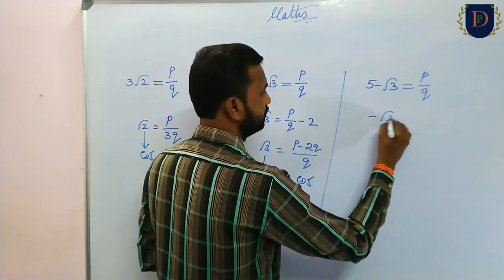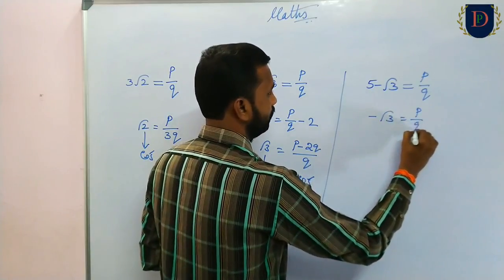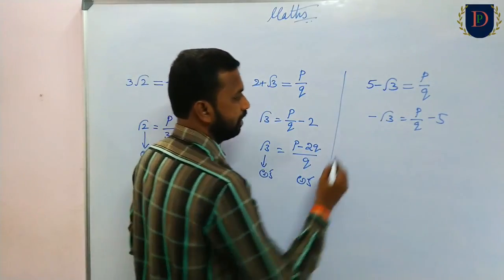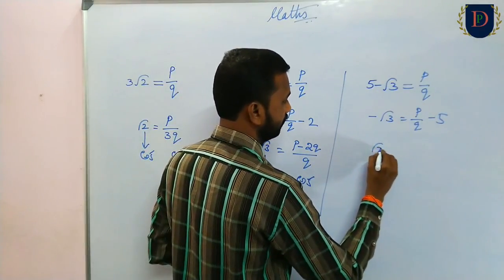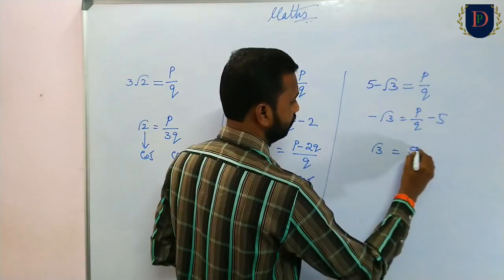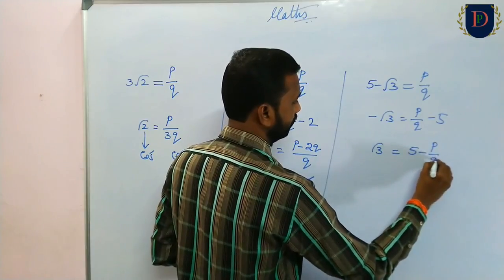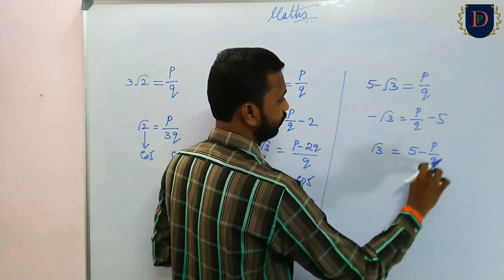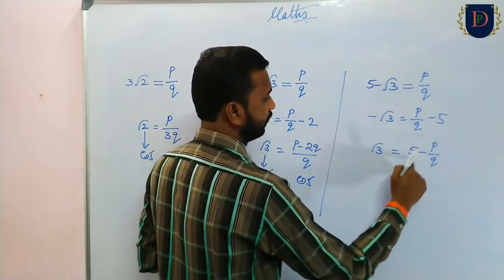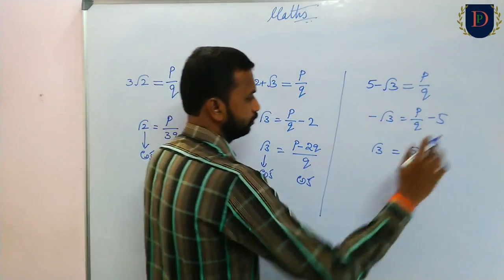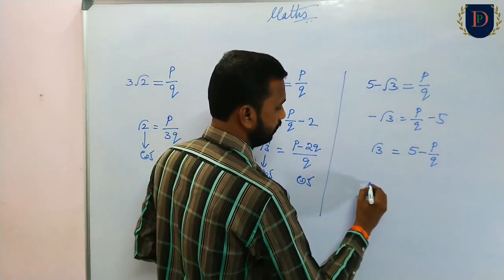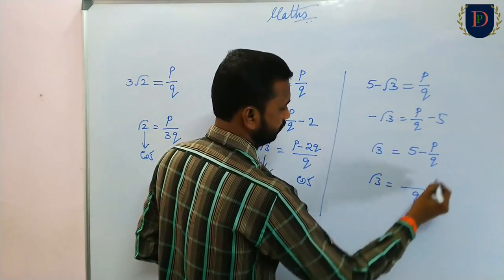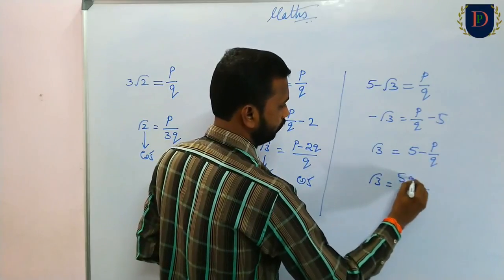For 5 minus root 3: root 3 equals P by Q. This plus 5 becomes minus 5. Changing the sign: root 3 is equal to 5 minus P by Q. Taking Q as LCM: root 3 is equal to 5Q minus P by Q.